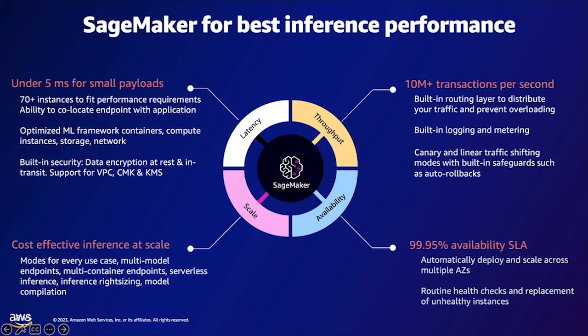SageMaker is purpose-built to support ultra-low latencies of under 5 milliseconds for small payloads. It provides optimized ML framework containers, compute instances, storage and network. Additionally, it has built-in data security for encryption at rest and in transit. SageMaker also supports 10 million-plus transactions per second, has built-in routing layers to distribute and prevent overloading, and has built-in logging and metering support.